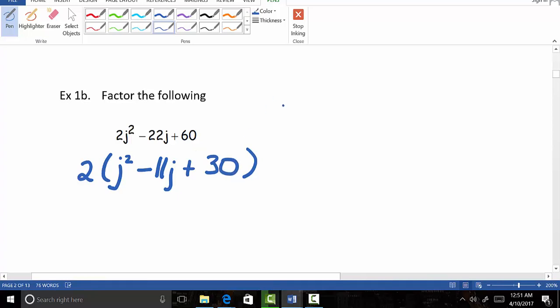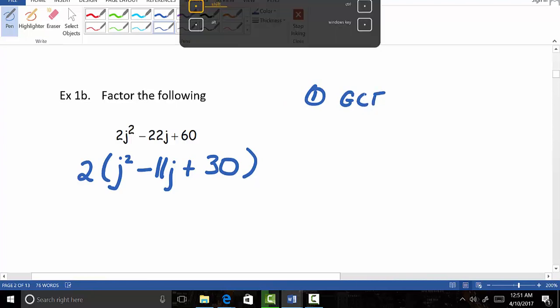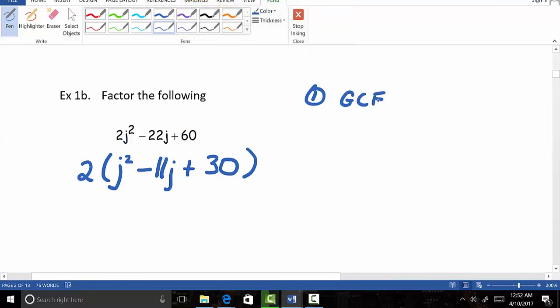Now, that first step, finding the GCF, the greatest common factor, is a rock-solid go-to because it will make your life easier as you're looking for less factors to kind of break this down even further.